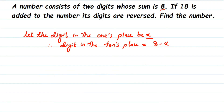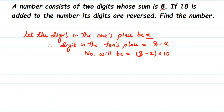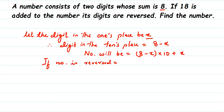We know the digits in both places, so we can write our two-digit number in expanded form. The number becomes (8 − x) × 10 + x, since 8 − x is in the tens place and x is in the ones place. If the number is reversed, x comes into the tens place and 8 − x goes to the ones place, giving the reversed number as x × 10 + (8 − x).